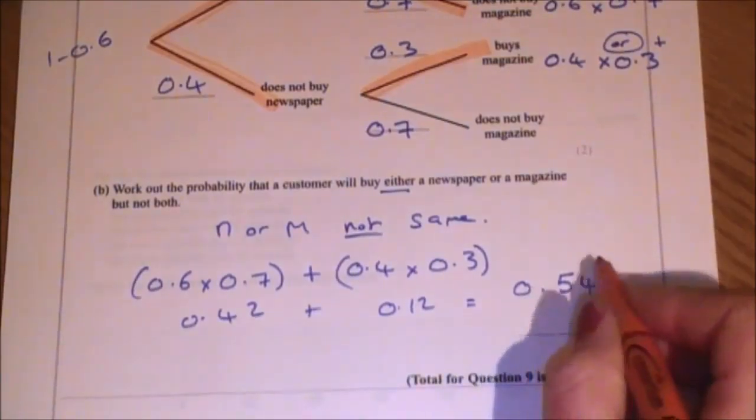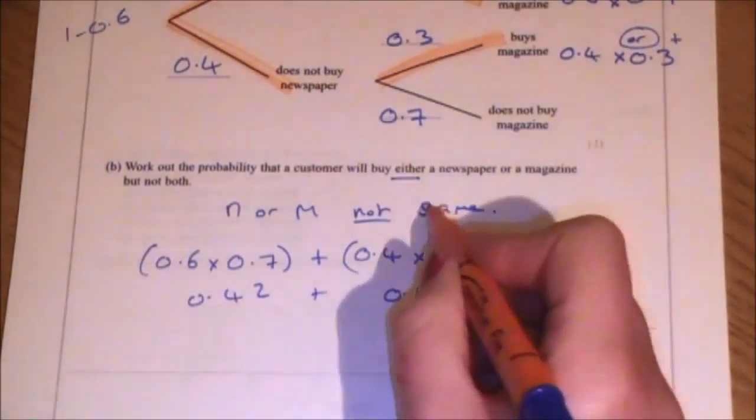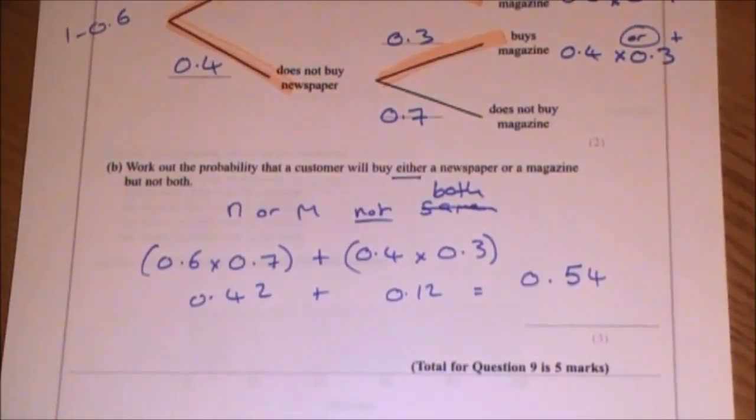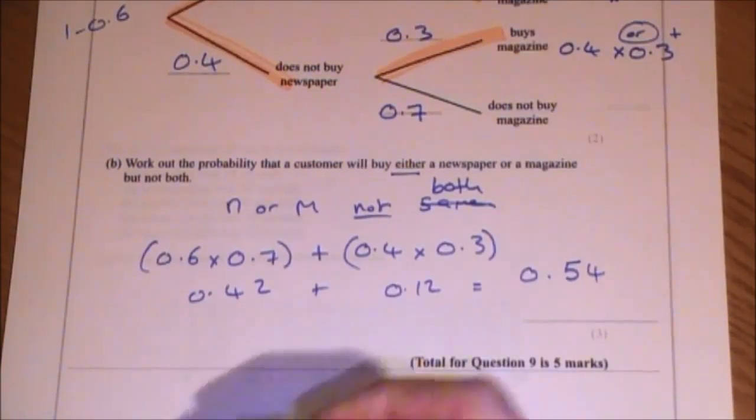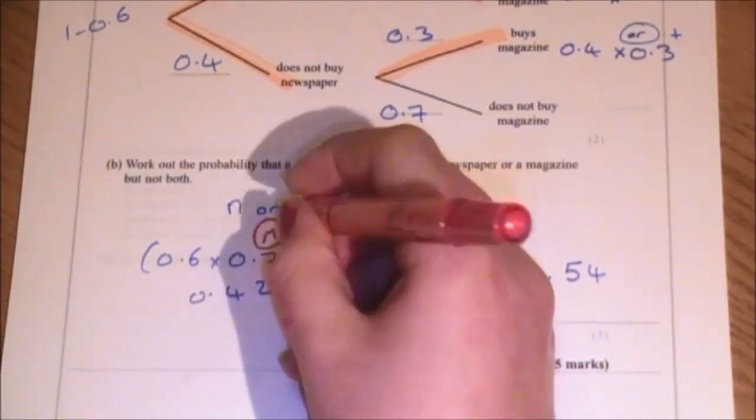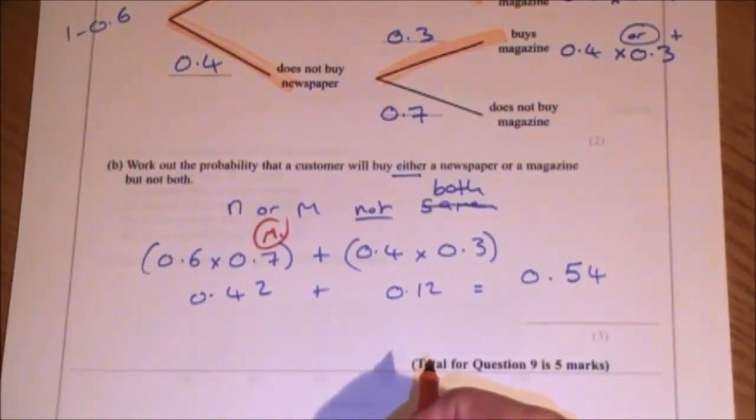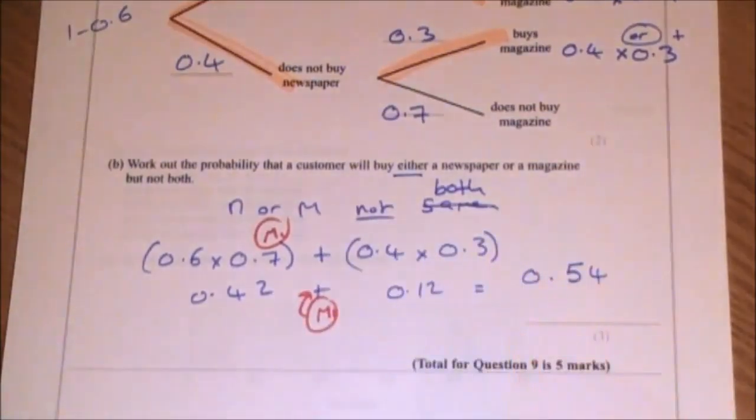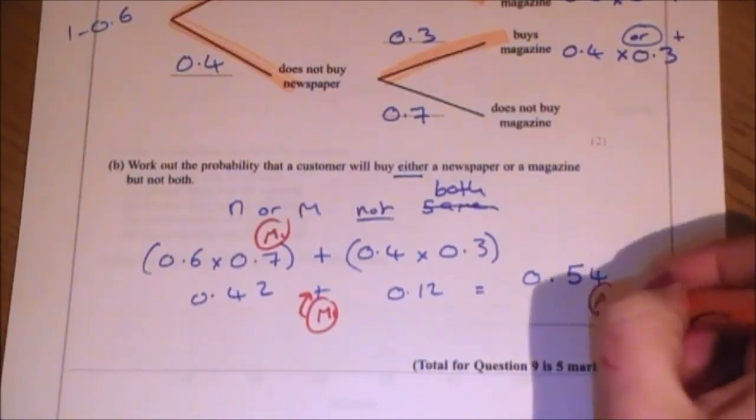I'm going to add those together and that's going to end up giving me 0.54. So that is the probability of buying either a newspaper or a magazine, but not both. With regards to mark scheme for this, it's a 3 marker. You get one mark for showing that or that. You also get a mark for showing the, whatever probabilities you've identified, you're adding them together. And then you get the third mark for the correct answer.